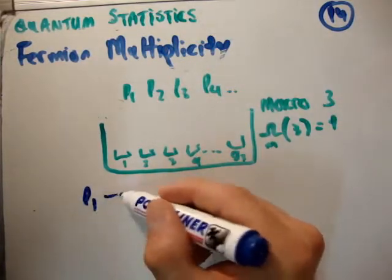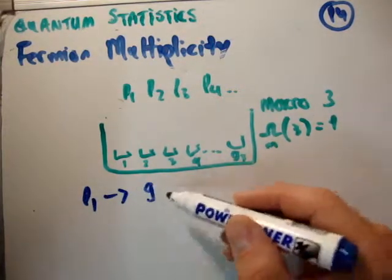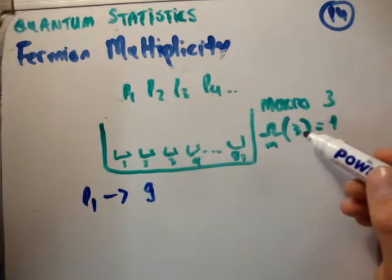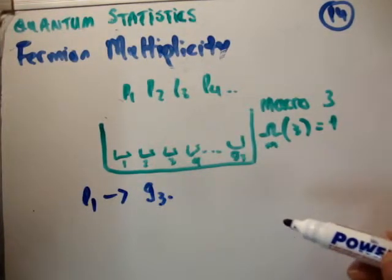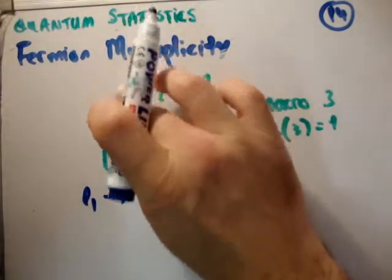So, let's say, for particle 1, well, there are g_3, for particle 1, there are g_3 places he can go, because we're talking about the third macro box. Grant, he's gone. He goes, let's say he goes in here.